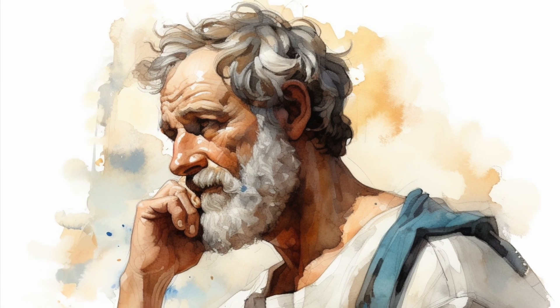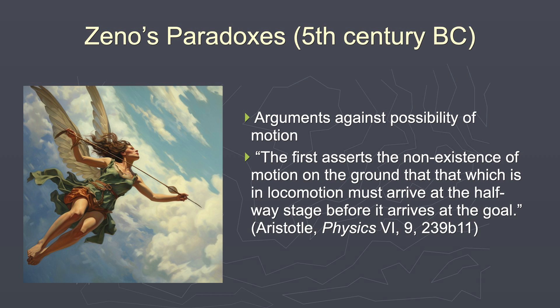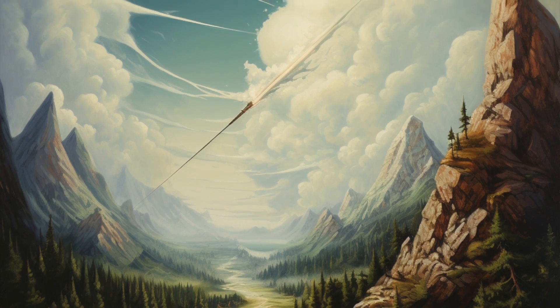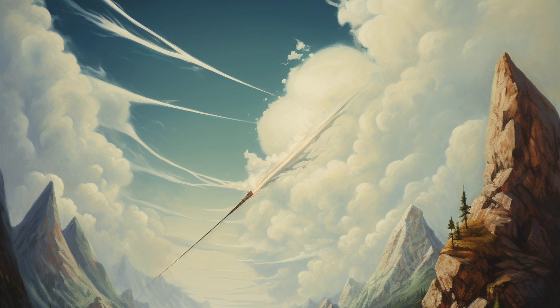The most famous of Zeno's paradoxes addresses the possibility of motion. Here's how Aristotle describes it: 'The first asserts the non-existence of motion on the ground that that which is in locomotion must arrive at the halfway stage before it arrives at the goal.' The arrow can never get to the target — it can never reach its goal. Why? Well, first it has to go halfway there. But in order to get halfway there, it first has to go halfway toward that. And to go a quarter of the way, it has to go halfway toward that, and so on. That seems to take an infinite number of steps even to get off the starting point.